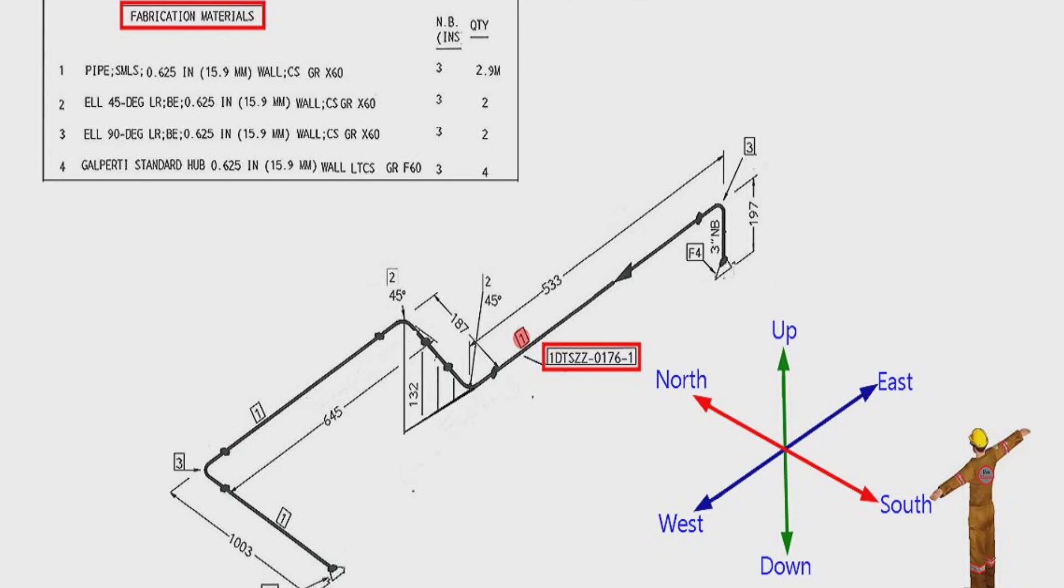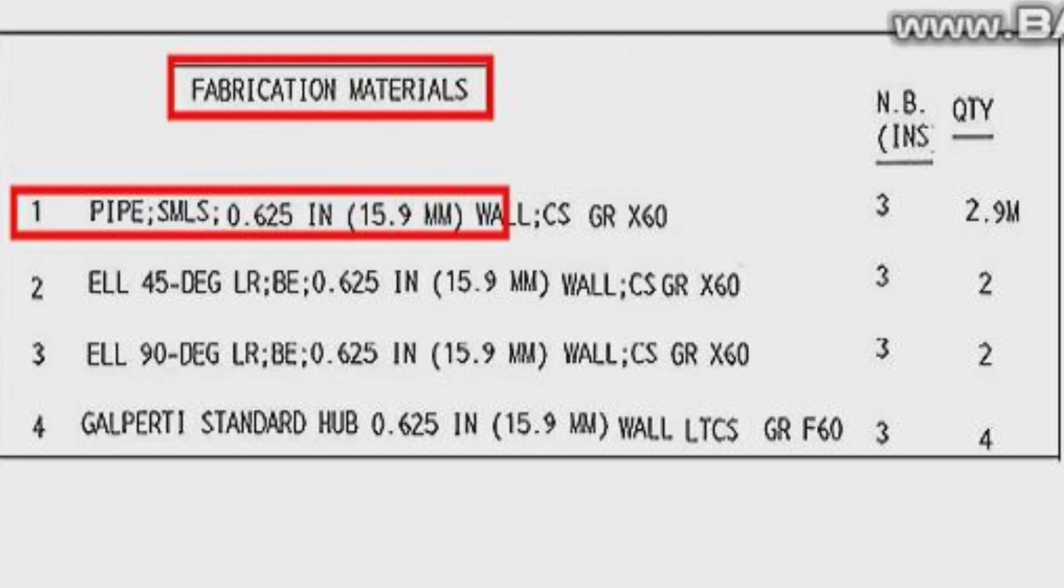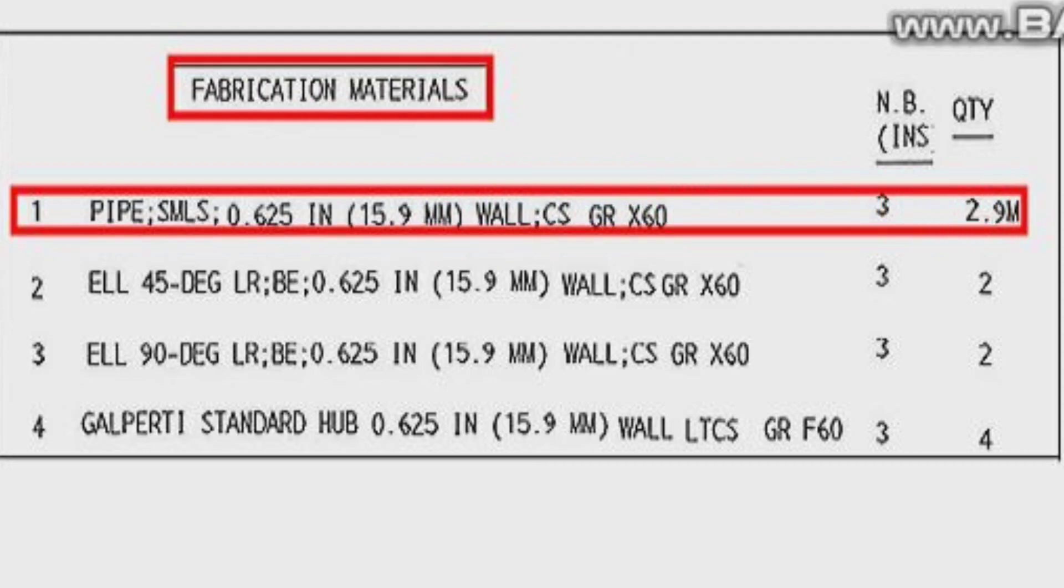Detail number 1 was used in several places in the pipe drawing. Let's look at the material list. Detail number 1, seamless pipe, wall thickness is 0.625 inches or 15.9 millimeters, carbon steel, grade is X60, size of pipe is 3 inches, 2.9 meters used.